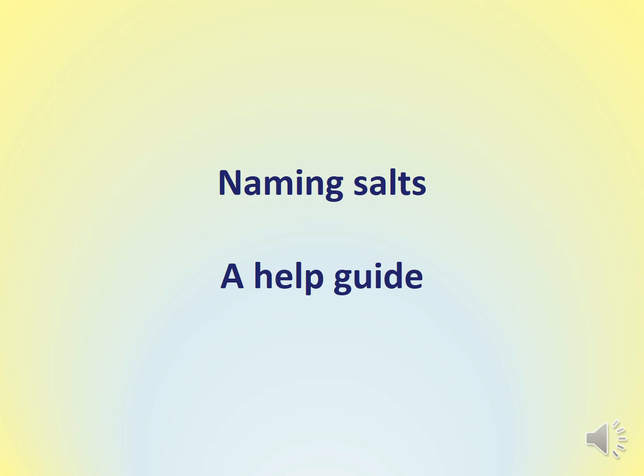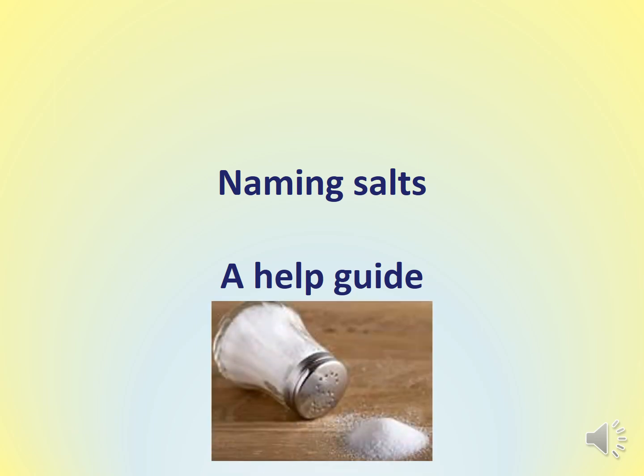One thing I'd also like to mention, just to make it clear, is when we are thinking about salt in our everyday life — and this is where science and our everyday life can get a bit muddled — we often just think of table salt. Table salt, what we put on our food, is an example of a type of salt. Its name is sodium chloride, but in chemistry there are many many more, so just bear that in mind when you're thinking about the word — it doesn't just mean the table salt you use on your food.